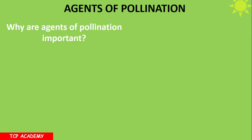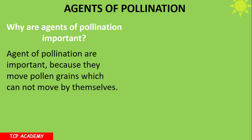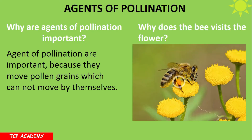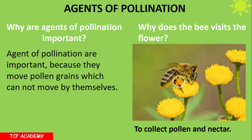Why are agents of pollination important? Agents of pollination are important because they move pollen grains, which cannot move by themselves. The bee visits the flower for nectar to make honey and pollen for protein. You can see pollen on the sack and the bee's body covered with yellow pollen — they are collecting pollen and nectar.